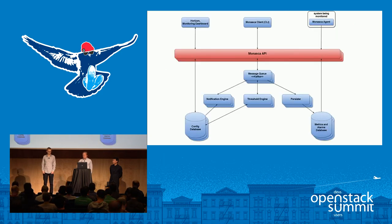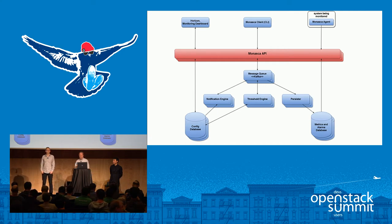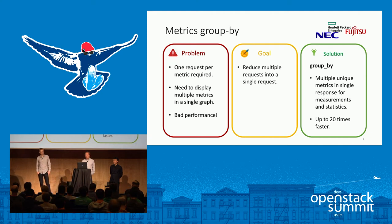Each section of the session will cover a main area within Monasca. This is the overall architecture slide. Highlighted in red is the Monasca API, which I'll be going through and talking about some of the feature enhancements in that area. Most of the enhancements around our API have been focused on improving performance, mainly for the sake of interactivity from UIs.